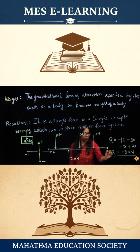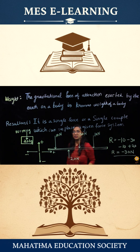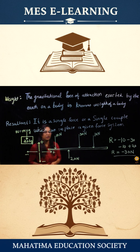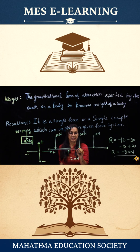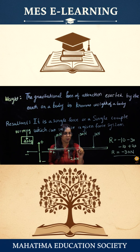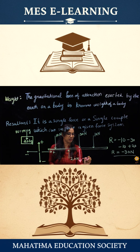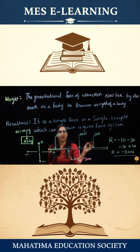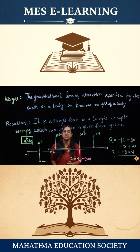So this force of -30 N would replace the whole system. Somewhere on the body, -30 N will be placed, acting in the downward direction. This single force of -30 N will replace the whole force system.